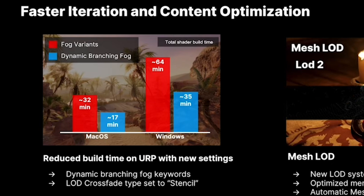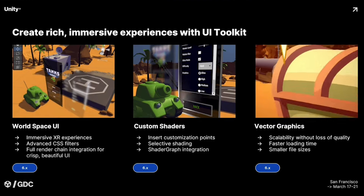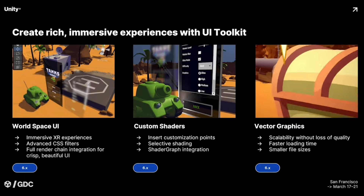While those core improvements are impressive, Unity is also introducing some fantastic new developer tools. I'm excited about the UI Toolkit — I wanted to do a tutorial on it, but since it doesn't have world space capabilities I couldn't use it in VR. That changes now: the UI Toolkit will finally be deployable in world space, which is huge for all developers but especially anyone working with 3D interfaces or XR. It's also bringing full render chain integration with support for custom shaders, vector graphics, scalable UI elements, and a native screen reader for better accessibility.